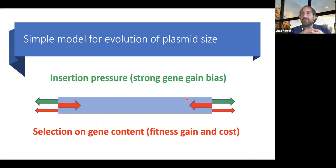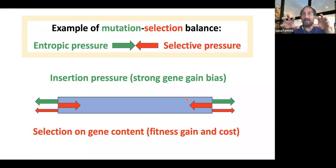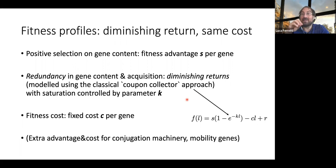There will be selection on gene content, both in terms of fitness gains from acquiring more genes and in terms of fitness costs. This is a situation where mutation and selection act in different directions — a classic of evolutionary biology. What we see in terms of diversity is determined by a balance between the entropic mutational pressure that generates entropy and selective pressures that keep it at bay. We assume, simplifying a lot, a fixed fitness advantage S per gene across all different environments the plasmid could find itself in.